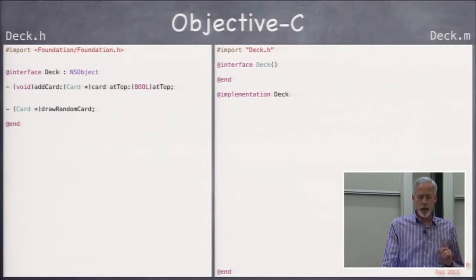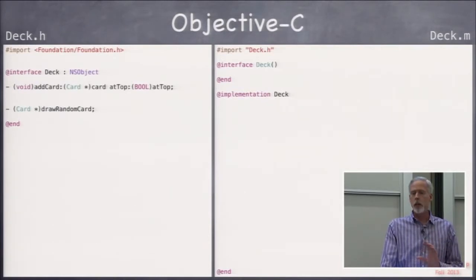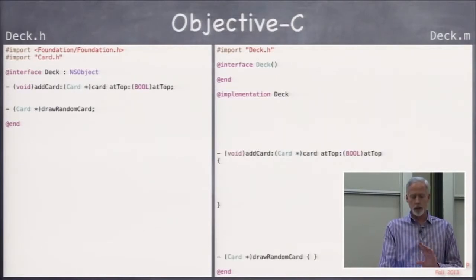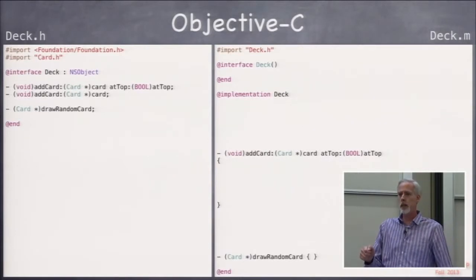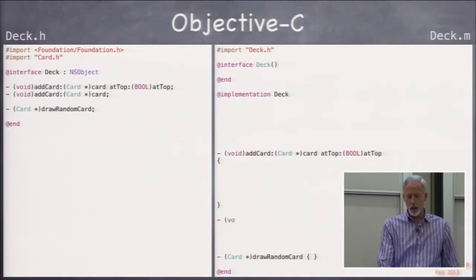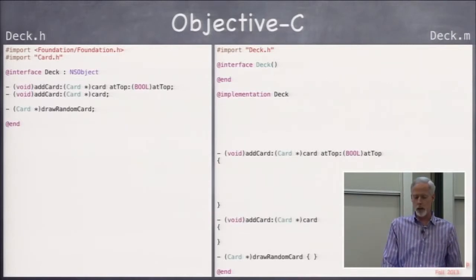If you want to have that atTop argument be optional, the only way to do that in Objective-C is to declare a new method, addCard: with no atTop on it. So this is a totally different method, totally unrelated to the other method, except that in its implementation we're just going to call the other one.